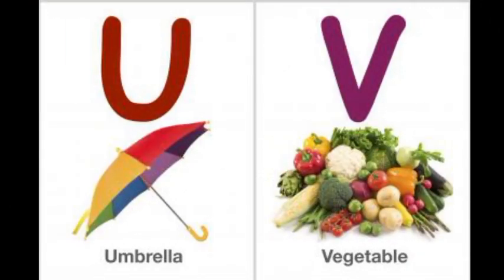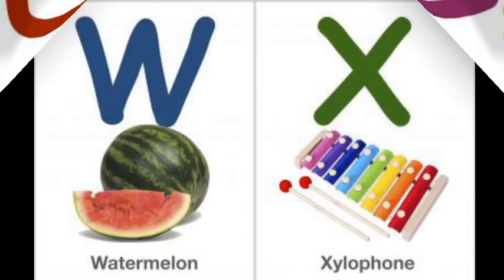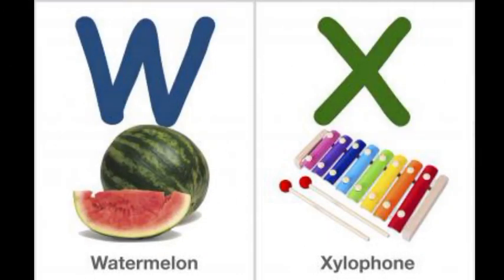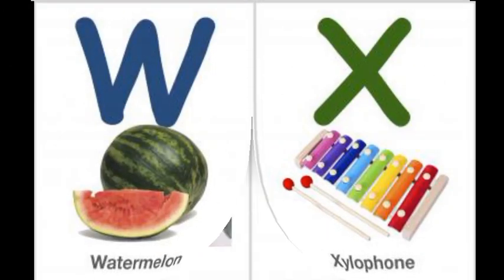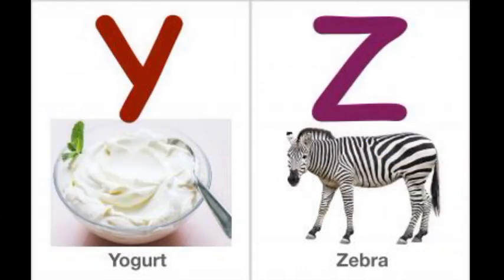U for Umbrella, V for Vegetable, W for Watermelon, X for Xylophone, Y for Yogurt, Z for Zebra.